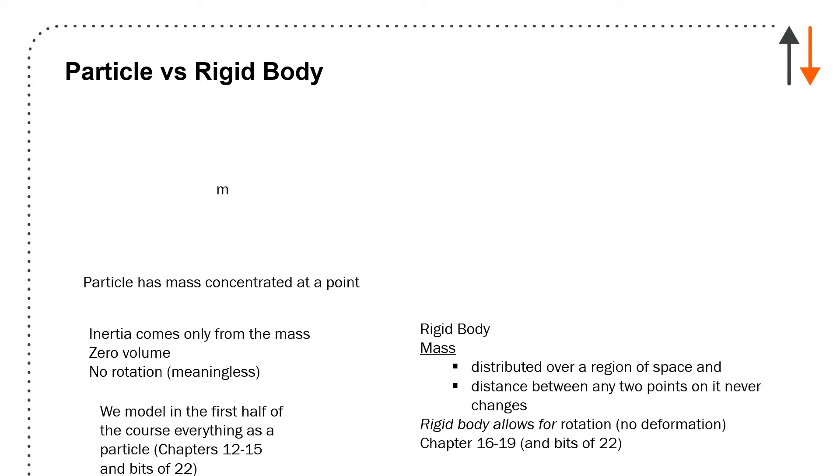The next one is rigid body. So it's a mass, just the same thing. So I can have the same mass. And the only difference is that it's distributed over a region of space. But any two points on that body will never change dimension or distance. So what that does is it allows for rotation. There's no deformation of the body. It doesn't stretch. It doesn't compress. It always stays the same shape. And everything sort of stays the same. This is for the second half of the course, chapters 16 to 19 and bits of 22.